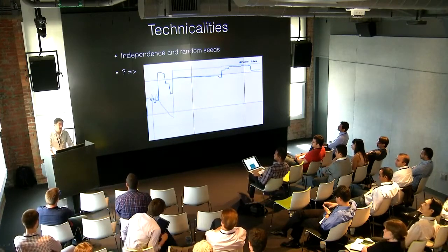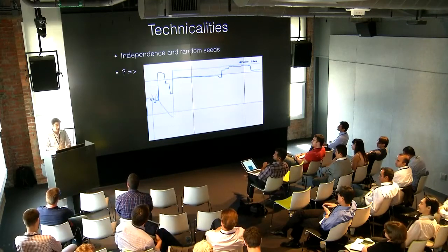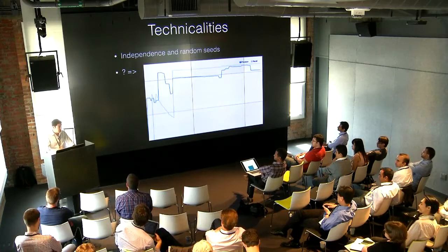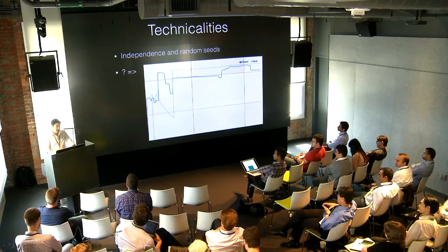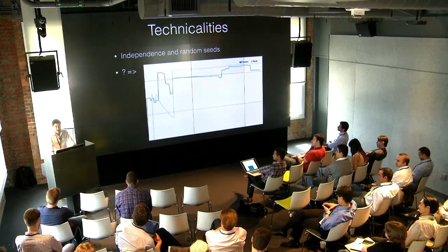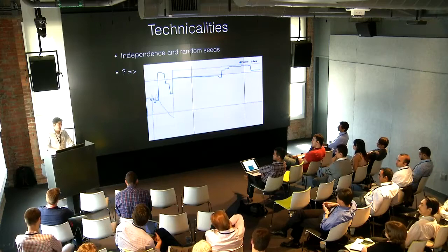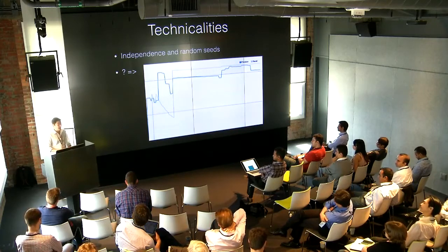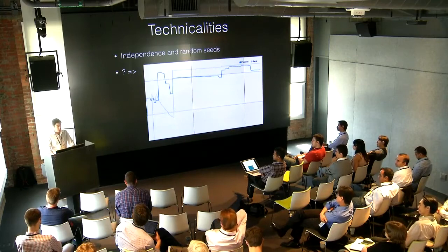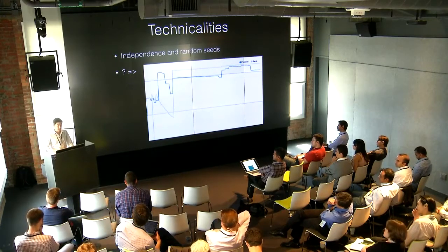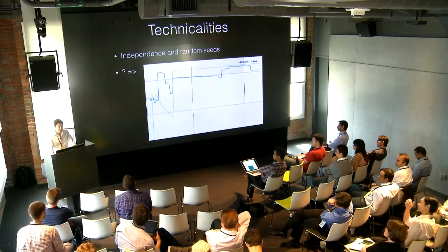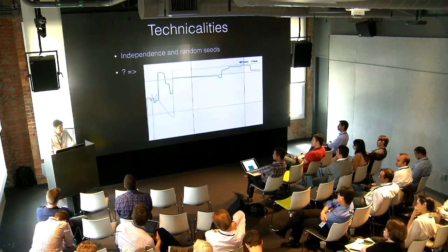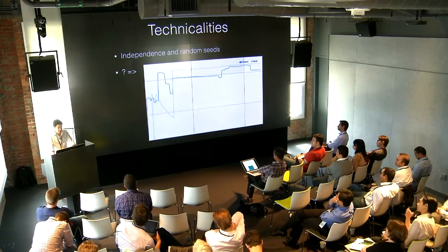The solution: instead of picking a random number per charge, we hash the card number and the date — maybe also the business ID — some relatively static value. We compare that hash number as our score. This way, we'll realistically allow only a fixed subset of cards, so no matter how many times you try card X, if that hash value is 0.5, it will never get through even if you try a thousand times.